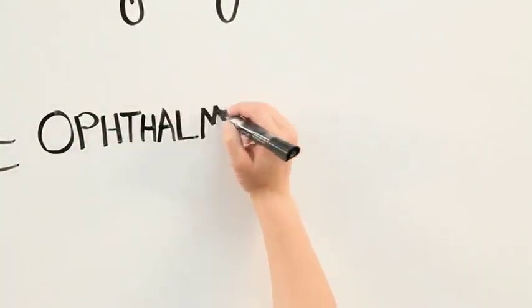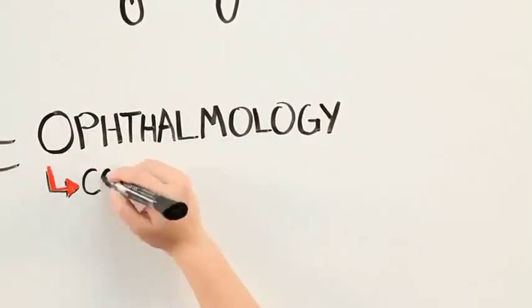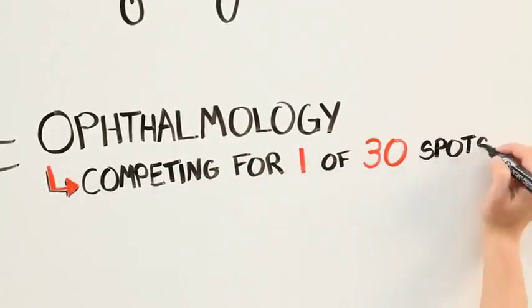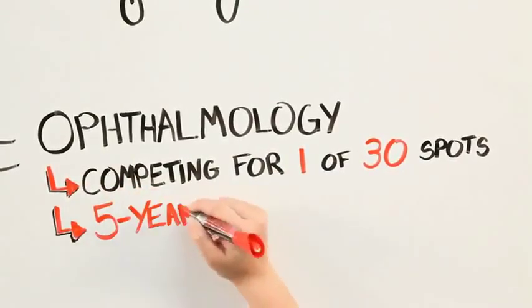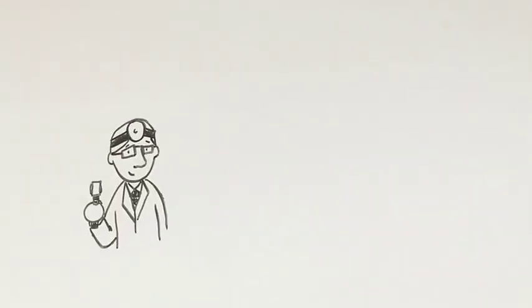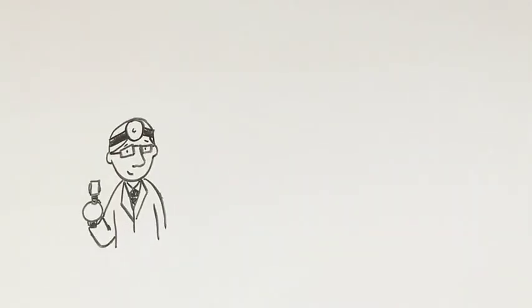If you decide to pursue ophthalmology you are competing for one of only thirty spots in the country and you must commit to a five-year residency program. Because ophthalmologists go to medical school before their residency, they are known as MDs.